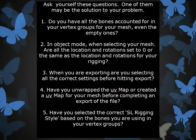When you're in object mode in Blender and you have your mesh selected, are all of the locations and rotations set to zero, or the same as the locations and rotations for your rigging? When you're in object mode in Blender and you have your mesh selected, are you selecting all of the correct settings before hitting export?